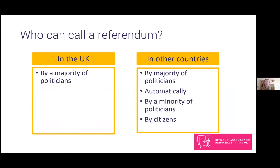Sometimes a citizen-called referendum is on a specific law; in other cases there can be referendums on anything. Usually if people vote for something in a referendum, politicians are expected to implement that result. That's usually straightforward if it's been set out in detail or in law, but it can get quite messy if the details of what a vote for change actually means haven't been worked out yet.